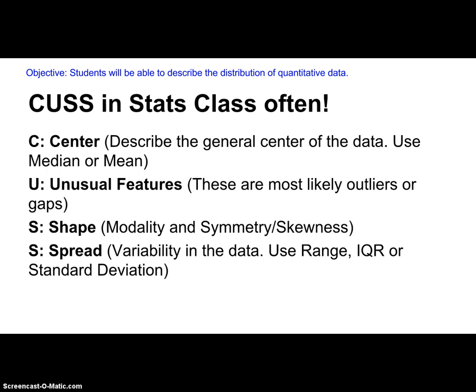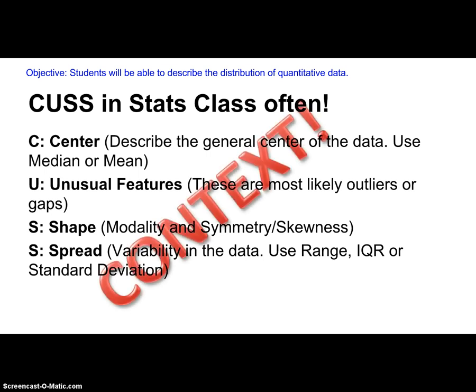One more thing — don't forget your context. Every time you do this, it must have context. You can't just say the mean or median is this, or the outlier is this, or just state the shape. You need to say what the context is — we need to know what you're talking about. Are you talking about fish? pH levels of rain? Speed of cardboard boats? We need to know the context of your data.